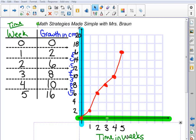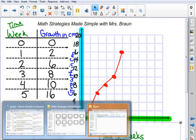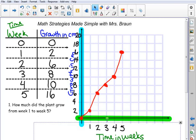Let's look at some questions we might see when we're looking at graphs like this. Our first question is: how much did the plant grow from week 1 to week 5? I'm looking at week 1 and week 5, so I'm looking at this difference here.